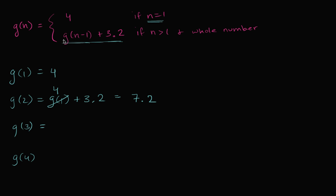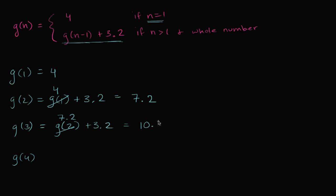g of three — we're going to fall into this case again, because three is greater than one and it's a whole number. So this is going to be g of three minus one, or g of two, plus 3.2. We know what g of two is — it's 7.2. So 7.2 plus 3.2 is going to be equal to 10.4.